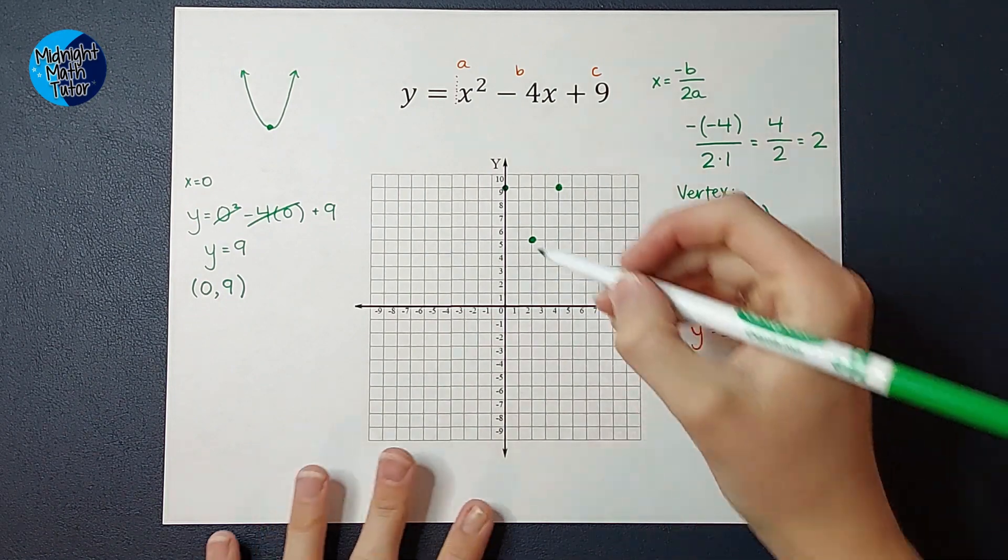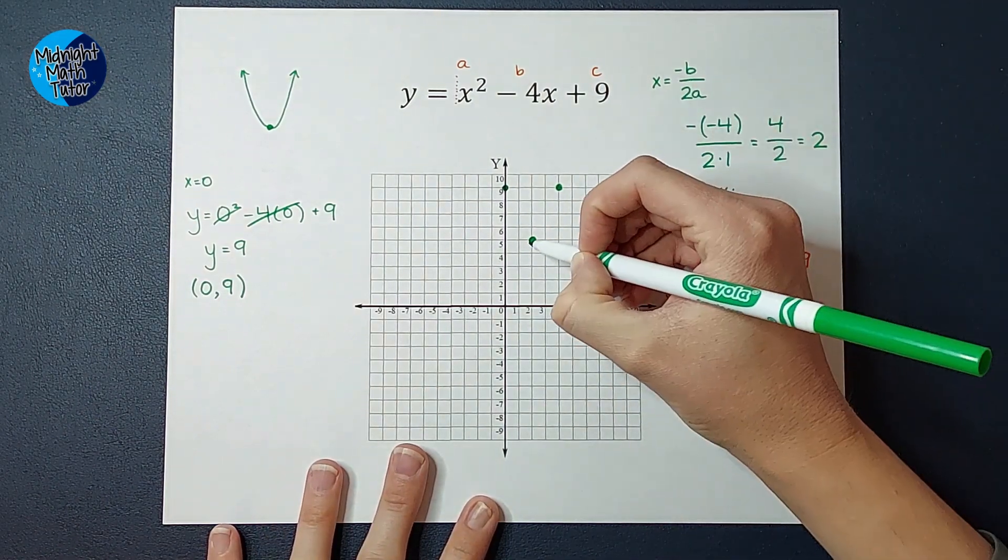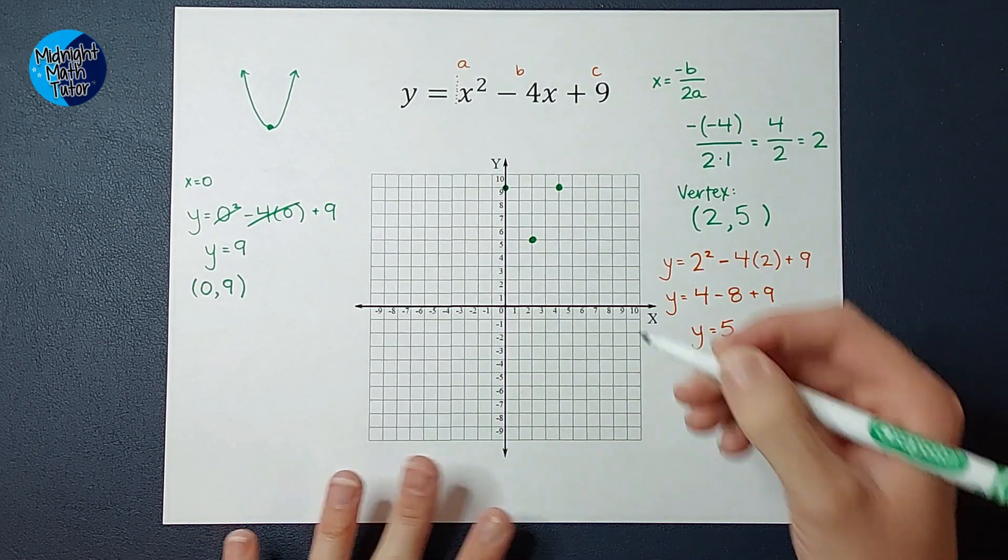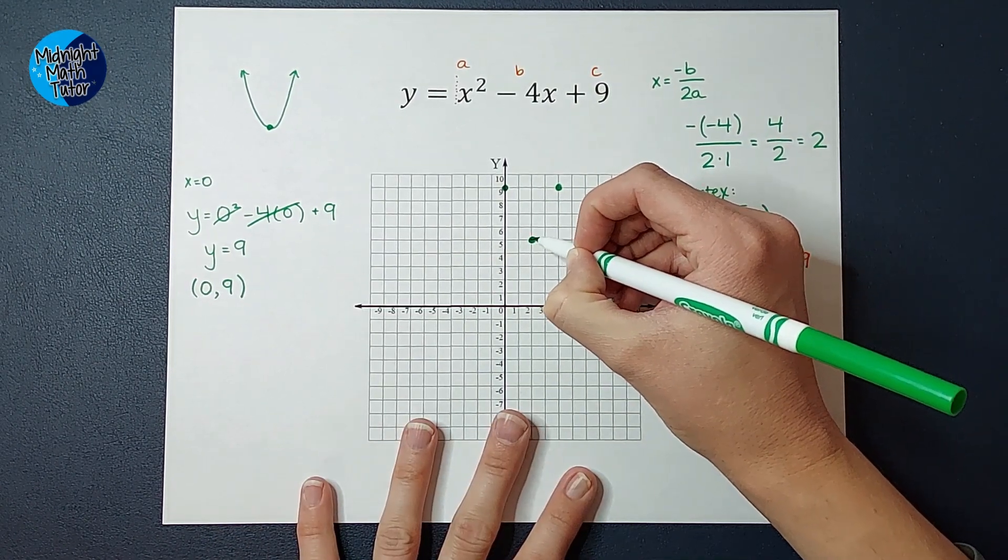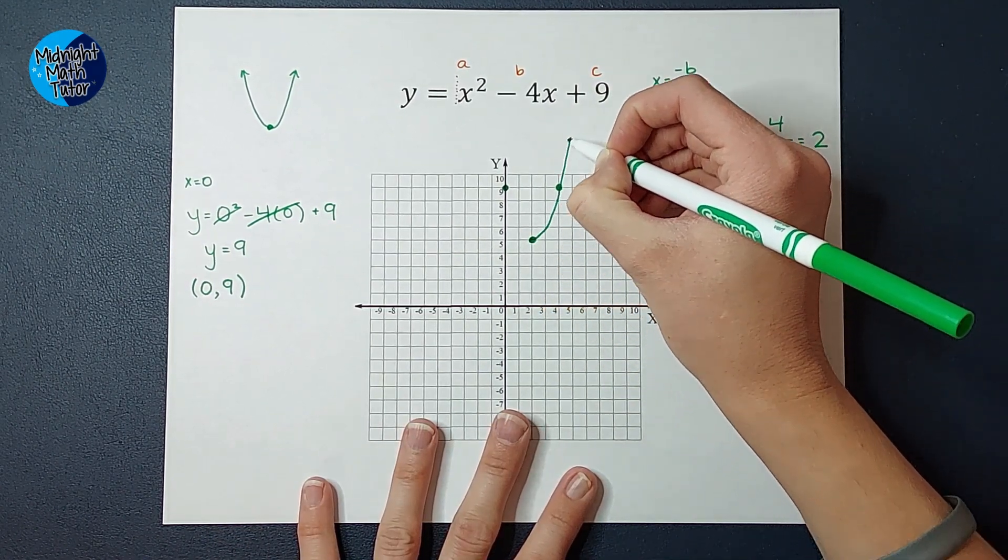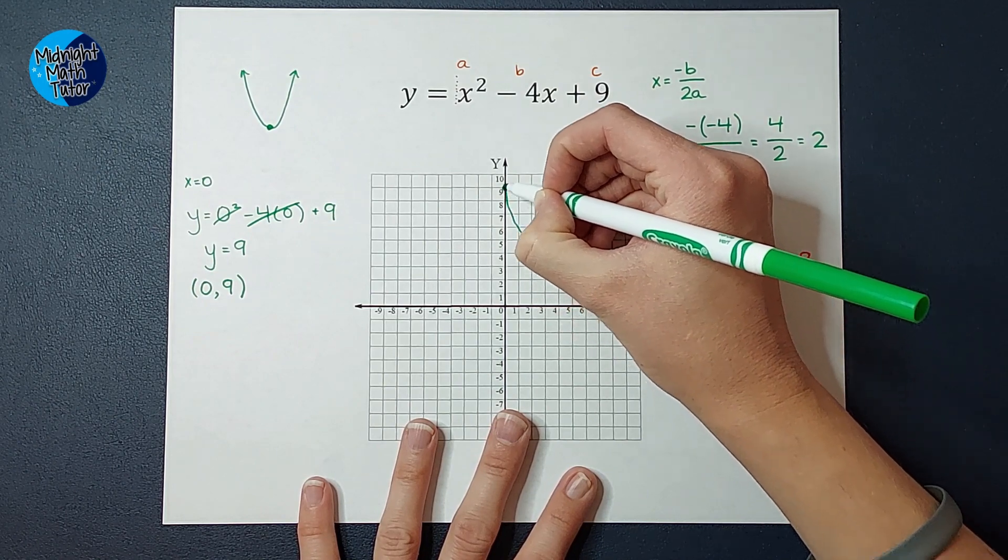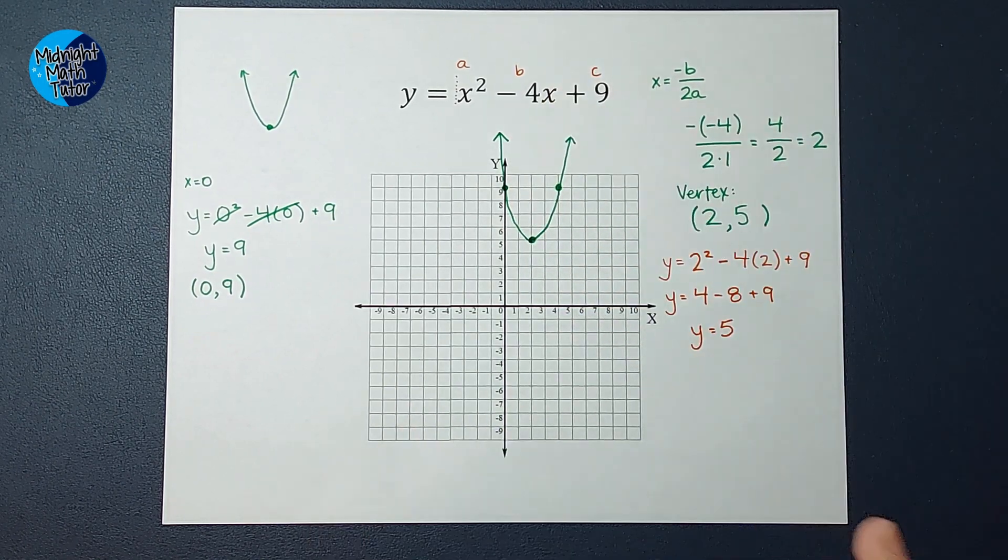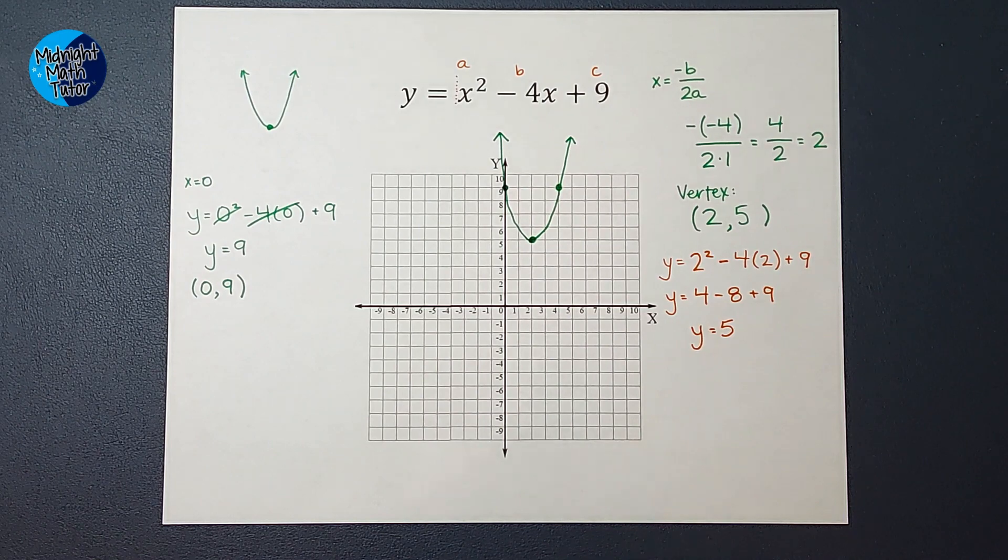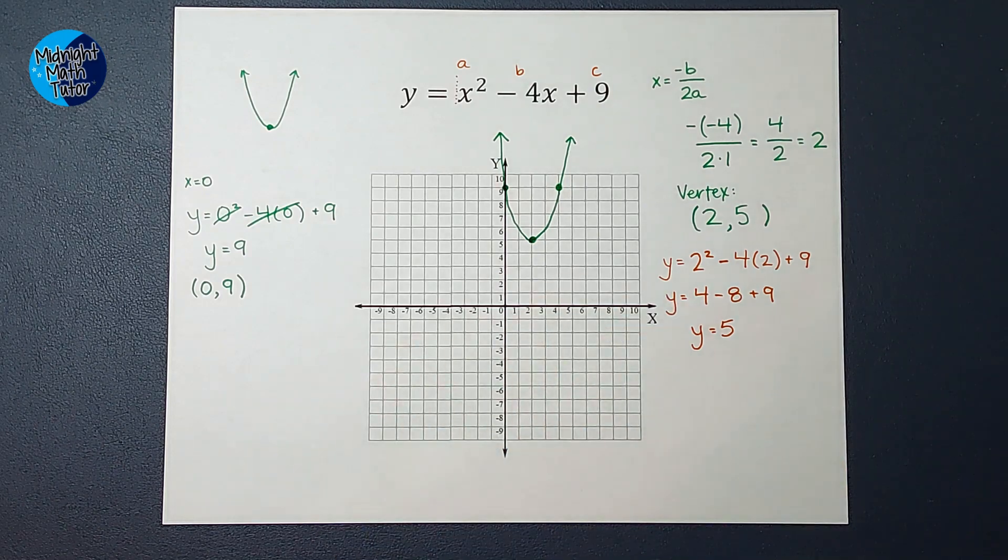Now, when I graph this, remember, it's not a straight line. It's a curved line. So we're going to go here, and it's going to be curved up and curved up. If you're not sure about the reflection, like where the other one should be, you can always go ahead and plug in another point. But hopefully this made sense. If you need some more parabola videos, I've got lots. I'll link a playlist for you in the corner. Thanks, bye.